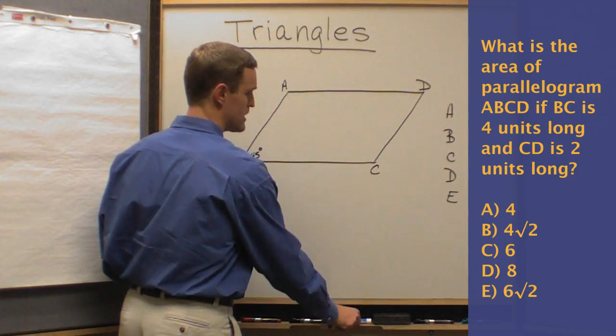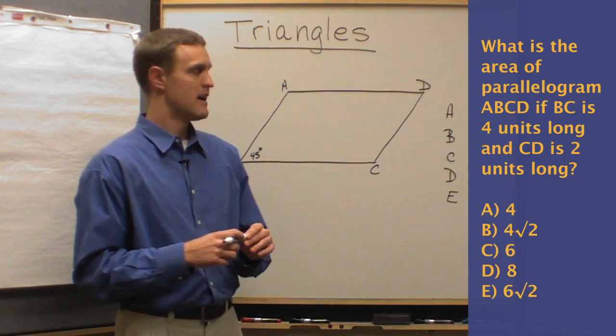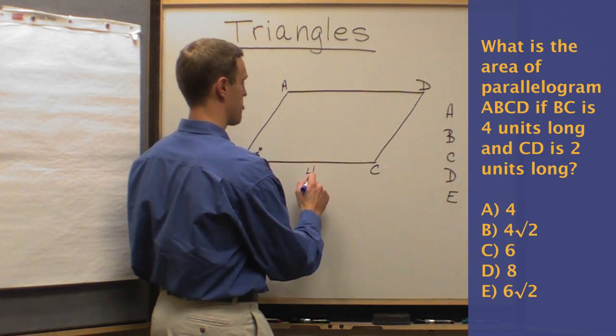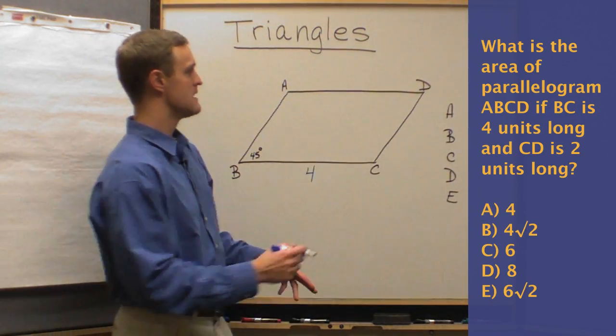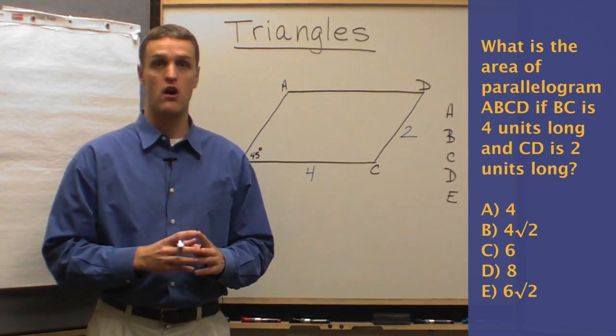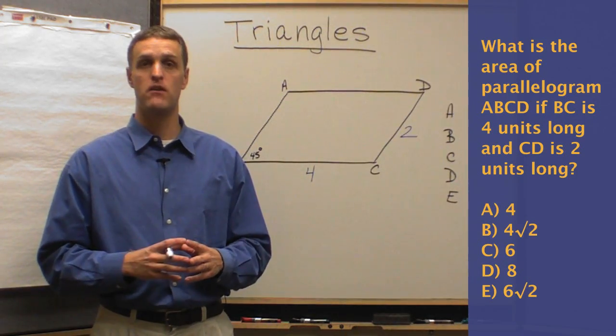Well, first things first, what do we do? We always write in the information given to us in the problem. And so to start off, we're told that BC is 4. I'm going to write that in. CD is 2. And hopefully my figure is drawn to scale well enough that if you were forced to approximate, you could do that.